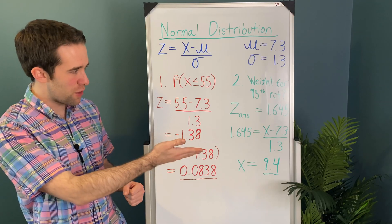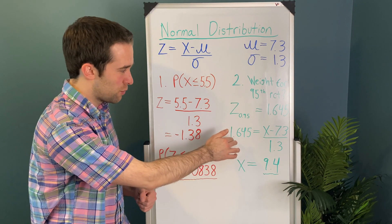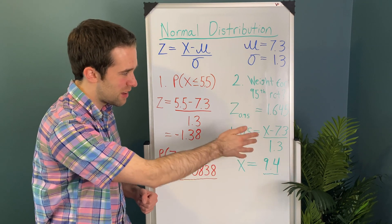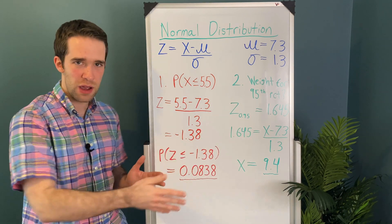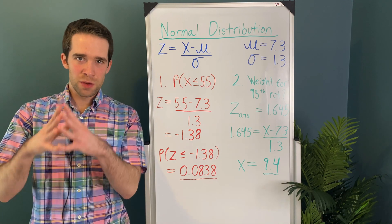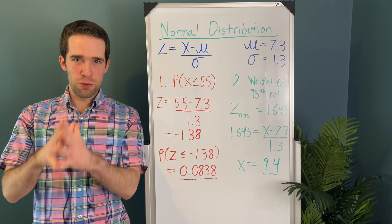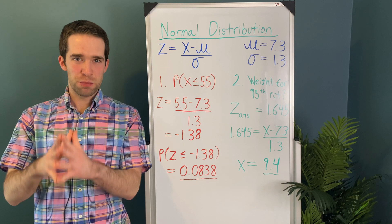Then we just solve for the measurement. We have 1.645 equals x minus 7.3 over 1.3. We solve for the measurement. We have to be at 9.4 pounds to be in the 95th percentile here.